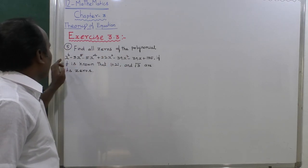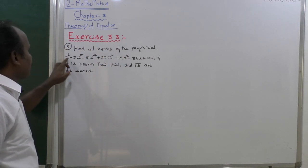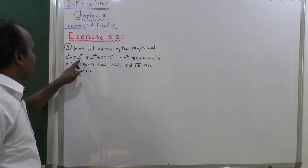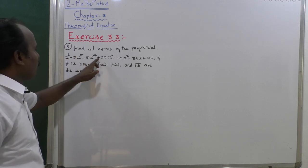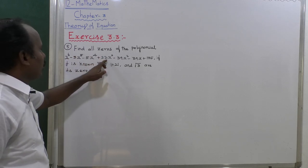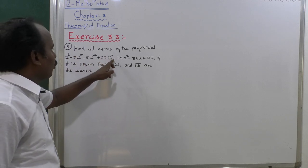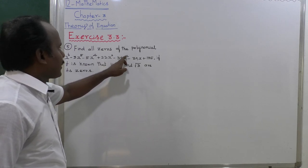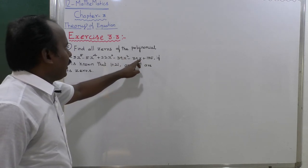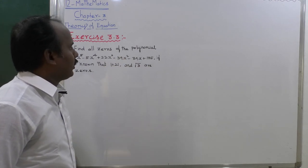Find all the zeros of the polynomial x power 6 minus 3x power 5 minus 5x power 4 plus 22x cube minus 39x square minus 39x plus 135.